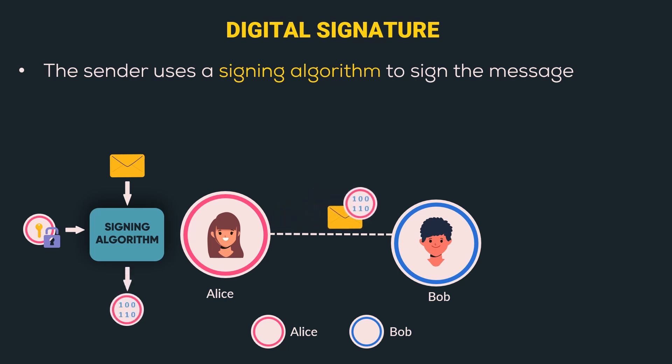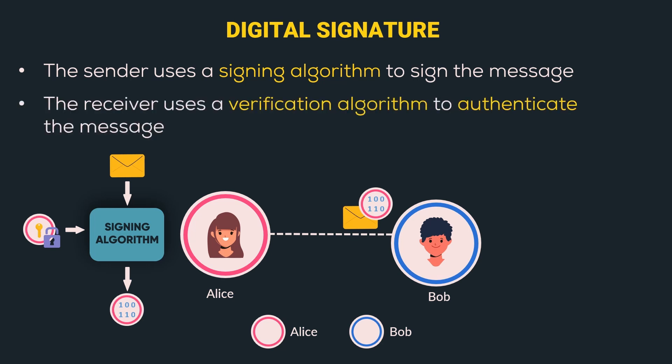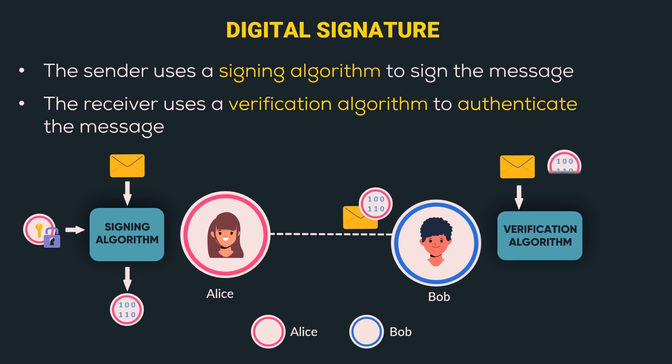Taking these inputs, the signing algorithm generates a digital signature. Alice adds this digital signature to the message and sends it to Bob. Bob then uses a verification algorithm which takes three arguments: the message, the digital signature of Alice, and the public key of Alice. The megaphone or speaker symbol indicates a public key — it is a key known to the general public. The algorithm tells us whether the digital signature is valid or not. If valid, it authenticates Alice; otherwise the message is invalid.